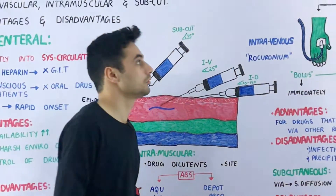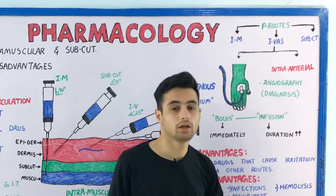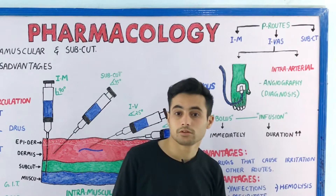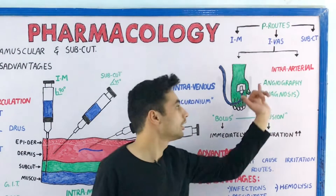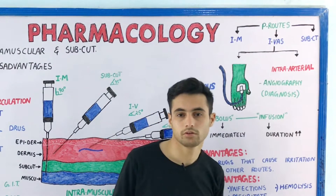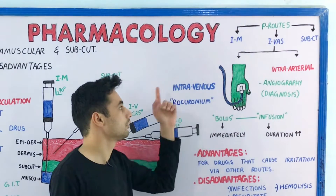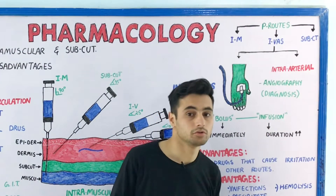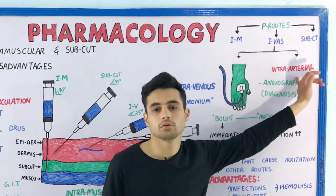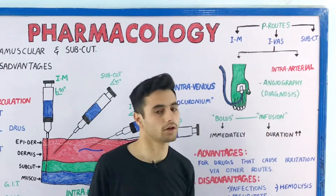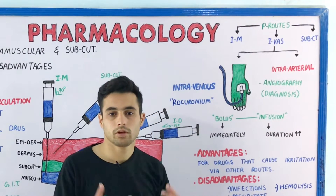The parenteral route majorly consists of intramuscular, intravascular, and subcutaneous. Intravascular is divided into intravenous and intra-arterial, since vessels may be arteries or veins. We usually administer drugs via the intravenous route, but the intra-arterial route is rarely used — mainly for diagnostic purposes like angiography, where we inject a drug to diagnose problems with the cardiovascular system.